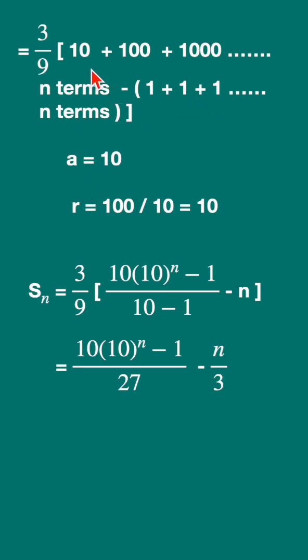Here this is a geometric series. A is 10, r is 100 upon 10, that is also 10. And this value 1 plus 1 plus 1 up to n terms is actually n.